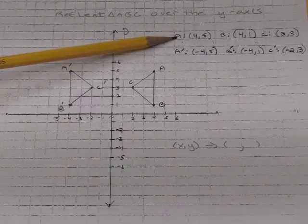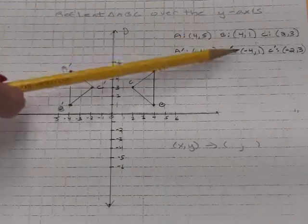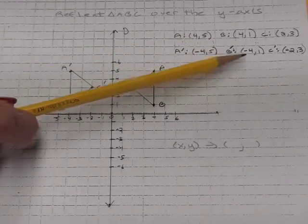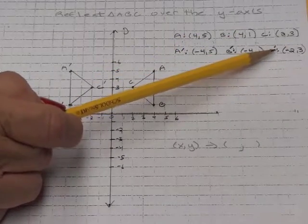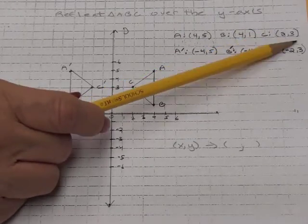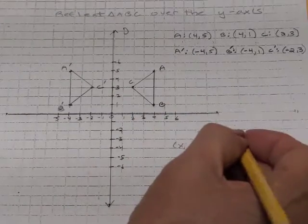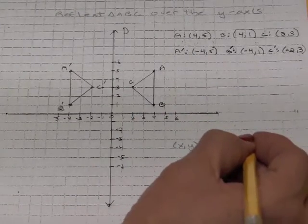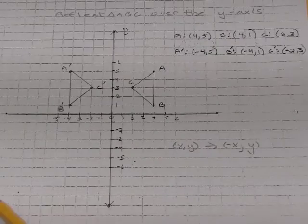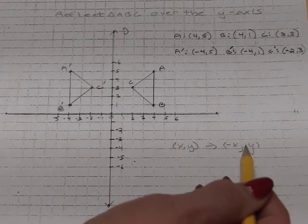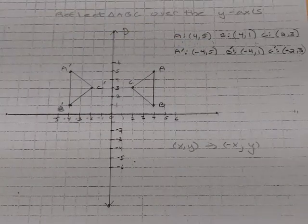Notice that A prime looks just like A, but the X coordinate is now negative four instead of positive four. B prime looks just like B except the X coordinate is negative four instead of positive four. And C prime has negative two instead of positive two. All the Y coordinates are the same. The rule is written this way: every point in the form X comma Y becomes negative one times X comma Y. The Y doesn't change; the X coordinate is multiplied by negative one.